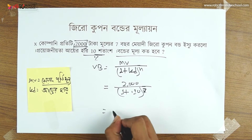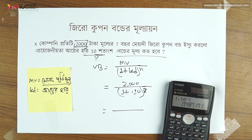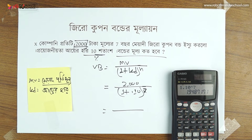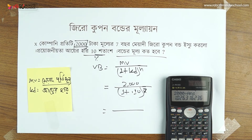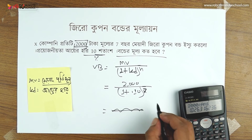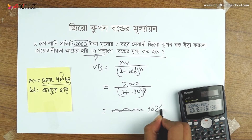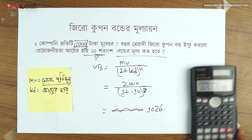We have the calculation. We have the value of 1.10 to the power N. The answer is 2000, and this is the value of 126.31. And then 1 plus KD, that's the value of 1.10 to the power N.